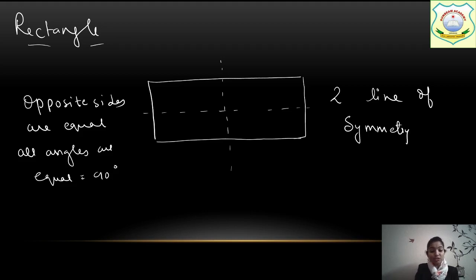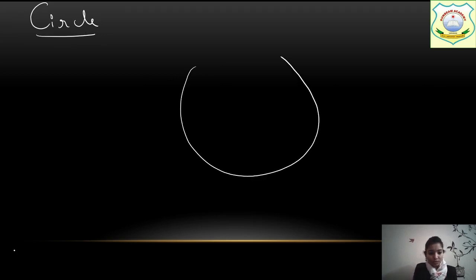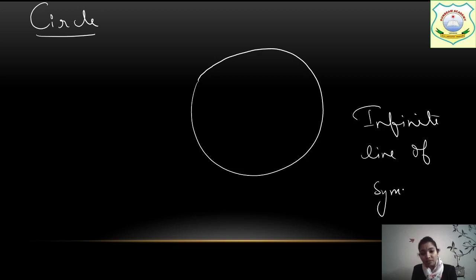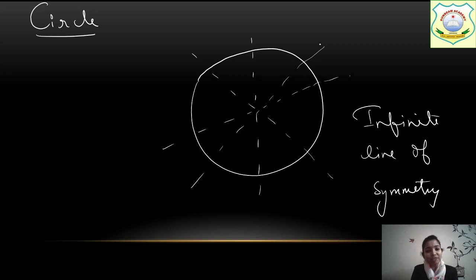After rectangle, we need to do the circle. Make one circle here. And then write: infinite lines of symmetry. You can draw 4 to 5 lines — as many as you want you can draw. Draw like this: 1, 2, 3, anywhere you can make, 3, 4. Draw that many and then just write 'infinite lines of symmetry'.